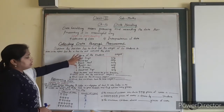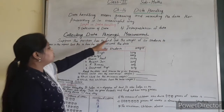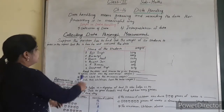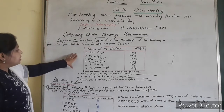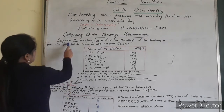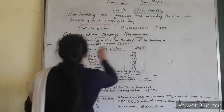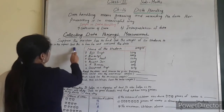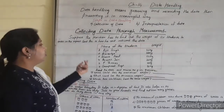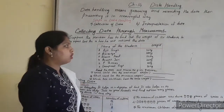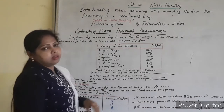I am going to show you some examples of data handling. Let's see collecting data through a major way — here, this one is given in your book. Suppose the teacher has to find out the grades of 6 students to enter in the report card. This is how you will record the data.